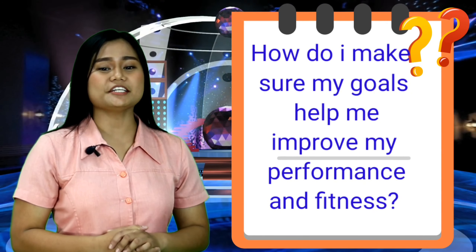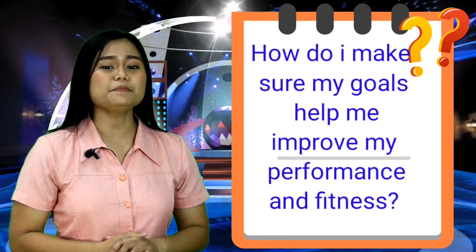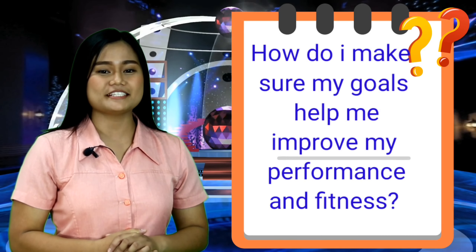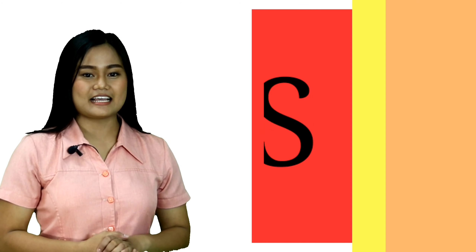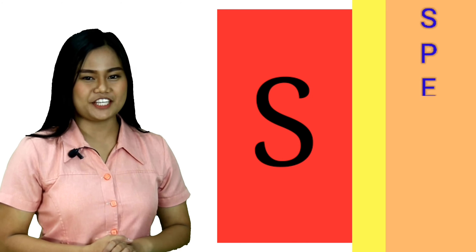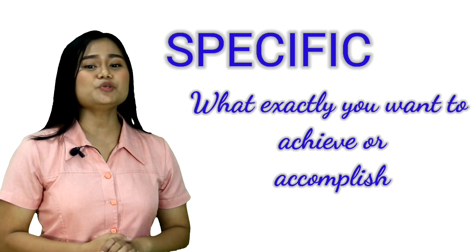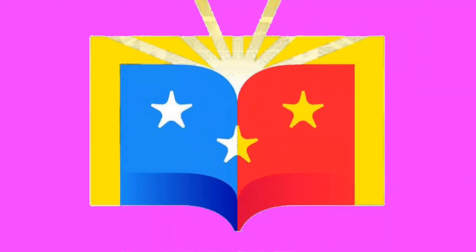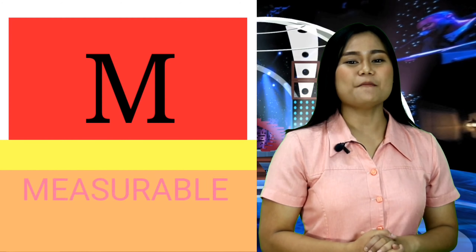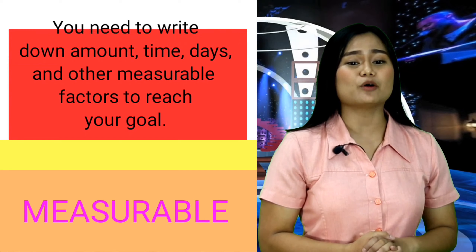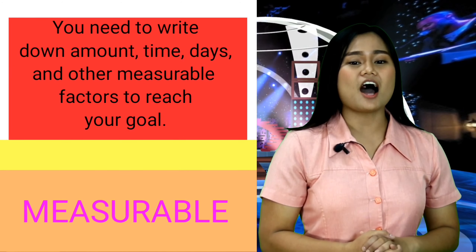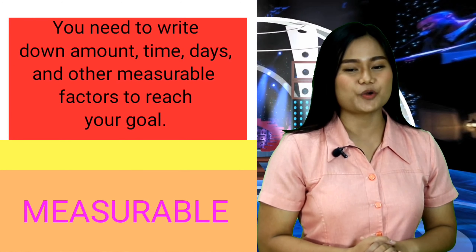How do I make sure that my goals will help me improve my performance and fitness? Number one, S stands for specific — meaning what exactly you want to achieve or accomplish. Number two, M stands for measurable — you need to write down the amount of time, days, and other measurable factors to reach your goal.